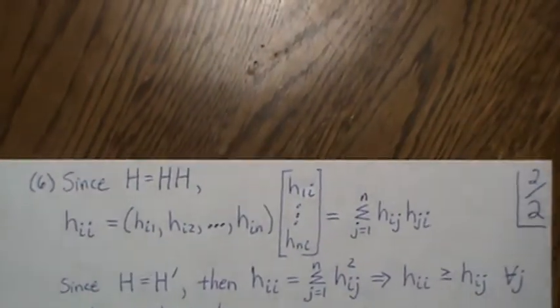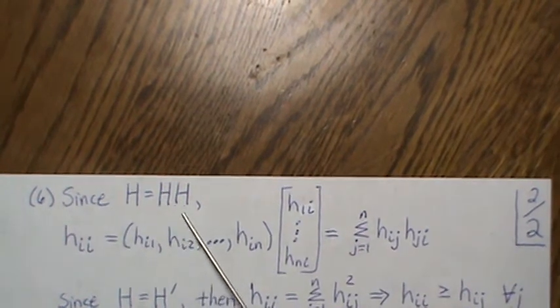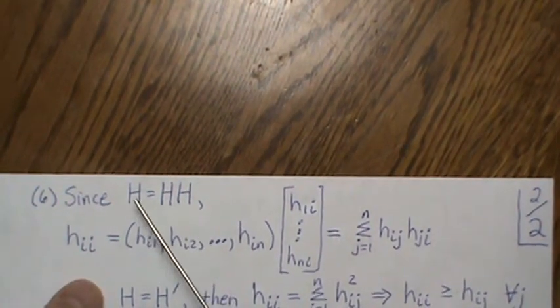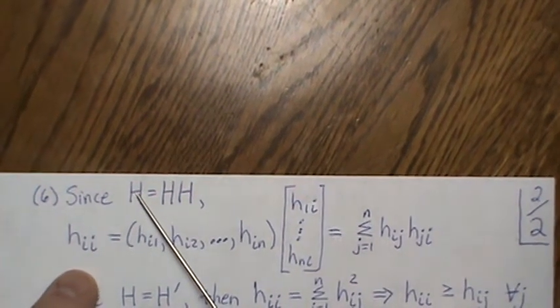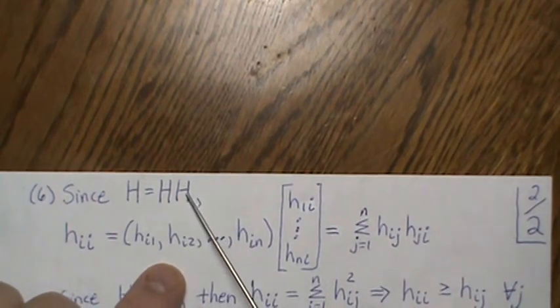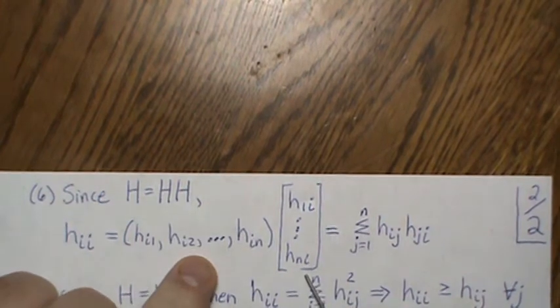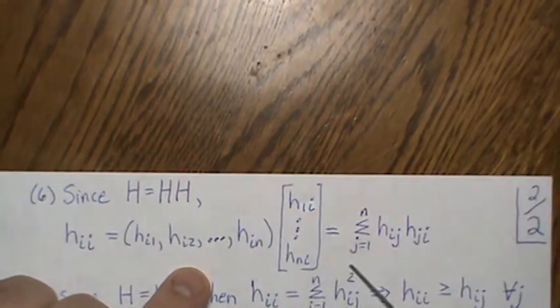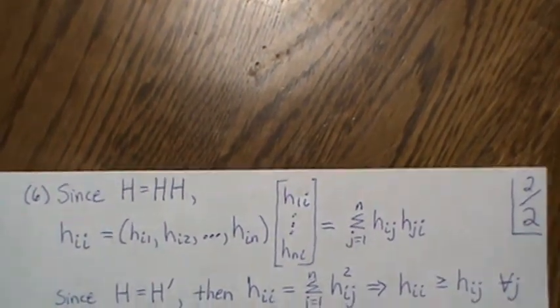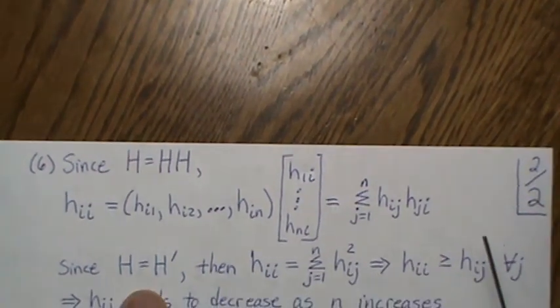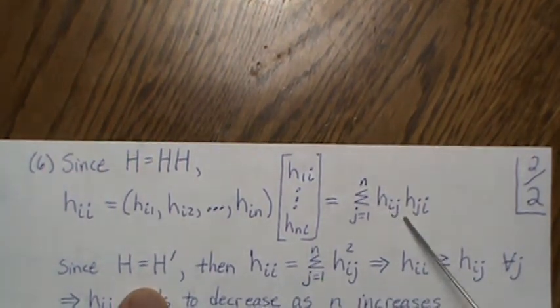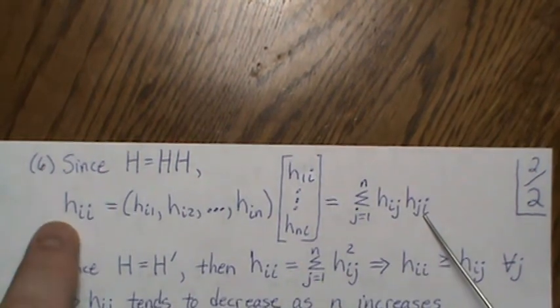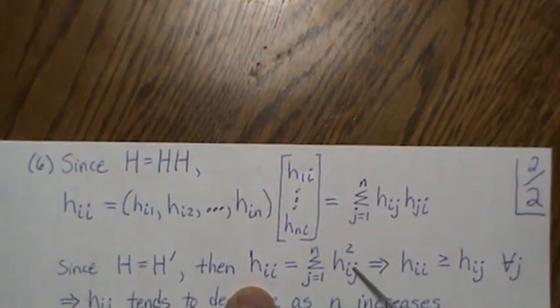Now since H is idempotent, then the i-th diagonal element would be the i-th row times the i-th column, which is this. And then when you do this vector multiplication you get this. But since the hat matrix is symmetric, h i j equals h j i. So that says that h i i is equal to this squared.